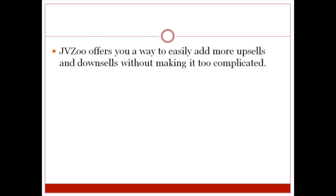If you saw the previous videos where we talked about mapping out your sales funnel, you realize that adding upsells and downsells is very powerful. But what if you wanted to add two one-time offers and two downsells, or three, four, or five one-time offers? Because if you make your sales funnel deeper, you'll actually make more profits — as long as your upsells and downsells are related.